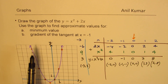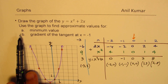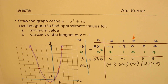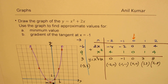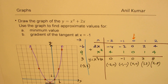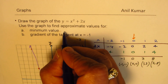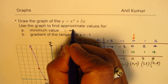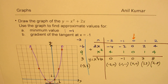Part A is to find the minimum value. From the graph, it is very clear that the minimum value is minus 1.